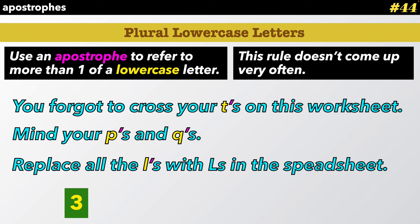Replace all the L's — lowercase L's — with L's in the spreadsheet. We only use an apostrophe to refer to lowercase letter plurals, not the big L over there. So the apostrophes in these examples are not showing a contraction, and they're not showing possession. This is a special rule for plural lowercase letters.